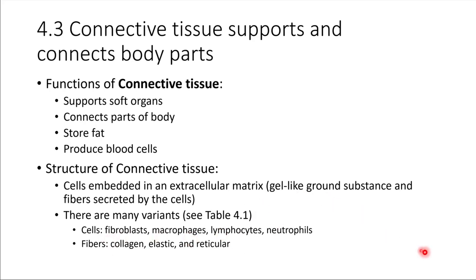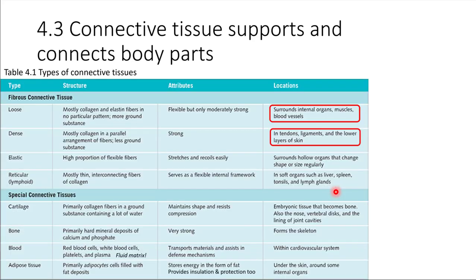Let's look at a table of different varieties of connective tissue throughout the human body. There are two major categories: fibrous connective tissue and special connective tissues. Starting with fibrous connective tissue — just like the name implies, there is a high presence of fibers in the extracellular matrix. Looking at loose fibrous connective tissue, the fibers are present but not arranged in any particular pattern, so there's a lot more of the gel-like ground substance than there are fibers.